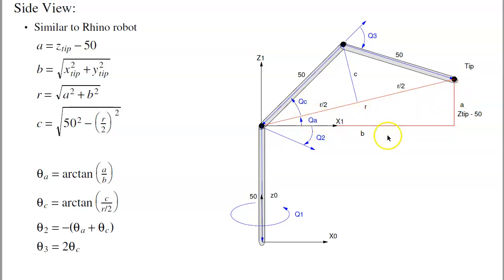ThetaA is arctangent of A over B. ThetaC is arctangent C over R over 2. ThetaA plus thetaC is minus theta2. And theta3, if you work out the triangles, this side right here, all angles have 20 degrees per right triangle. So it's QC plus 90. Actually, plus that angle equals 180. That gives you that theta3 is twice QC to make the angles add up.